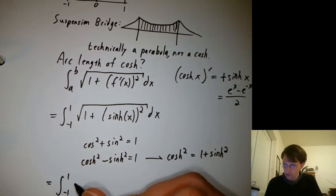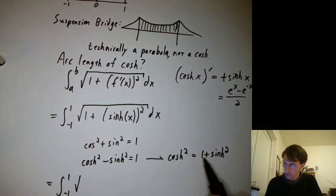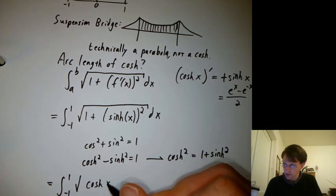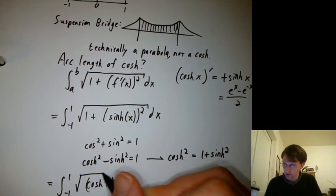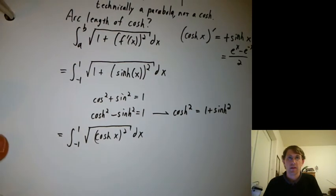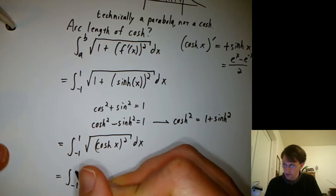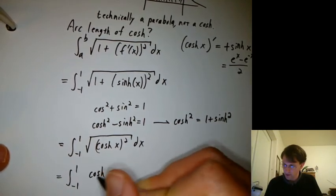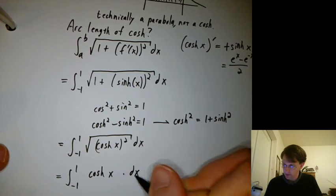So we've got an integral of negative 1 to 1, and the 1 plus sinh squared becomes cosh of x squared. And then those cancel, right? So we get negative 1 to 1 of just cosh x dx.